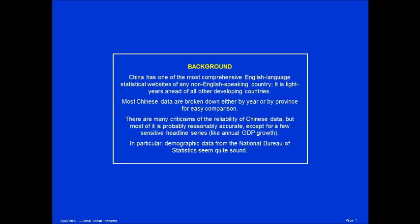Conveniently, most Chinese data are broken down either by year or by province for easy comparison, and though there are difficulties comparing editions of the National Bureau of Statistics yearbook from year to year, you can generally find what you want if you look hard enough. There are many criticisms of the reliability of Chinese data, but most of it is probably reasonably accurate.